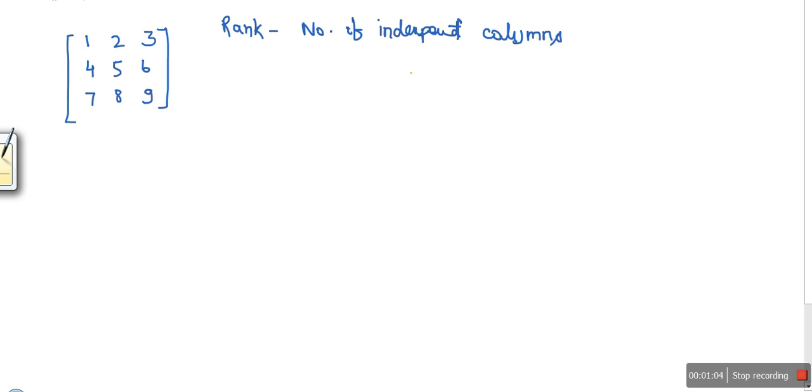Now what is the meaning of independent column? Let me take a simple example. Let's say I have this matrix: 1, 2, 2, 4. Now as you can see, this column is simply twice column 1. So if a column is a multiple of another column, that column you cannot consider as independent. If you look at this column, this is not a multiple of any column, so this is an independent column. But this column is dependent.